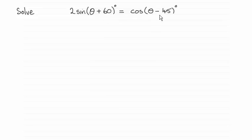What we do is essentially expand these brackets using the identities we should be familiar with - the sine of a plus b and the cosine of a minus b. Then what we do is